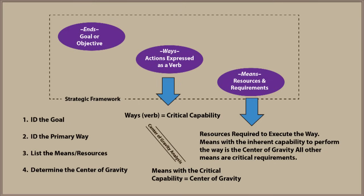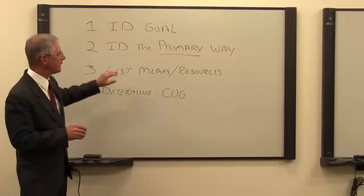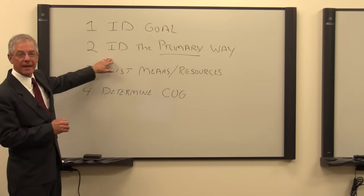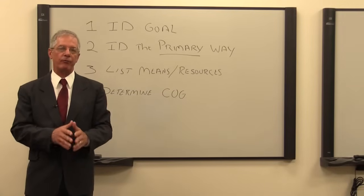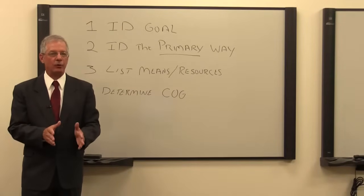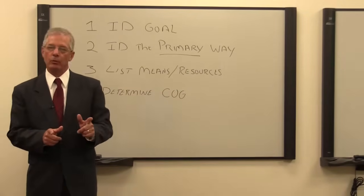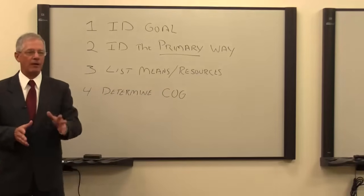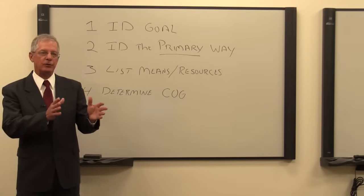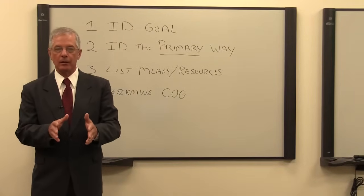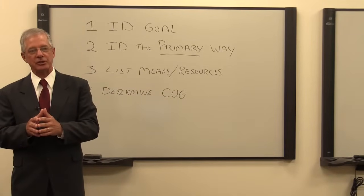All others are just requirements. Note that the key step in this process is identifying the critical capability — that is the way to achieve the goal. Identification of the critical capability must occur before identifying the center of gravity. Identifying the center of gravity is actually the last step, which is the reverse of doctrine's COG and critical factor analysis. Explained another way: ask what do I need to do to reach my objective? And what can do it? The doer of that action is the center of gravity.